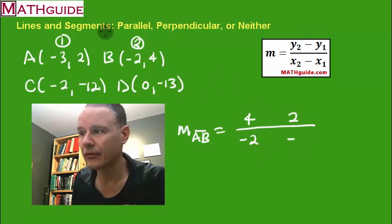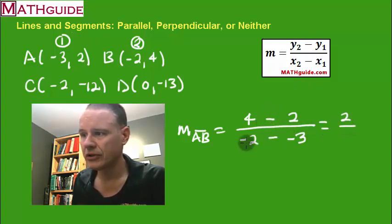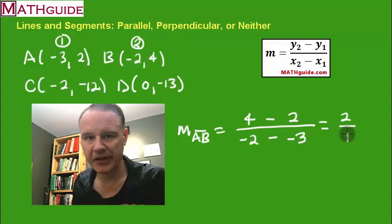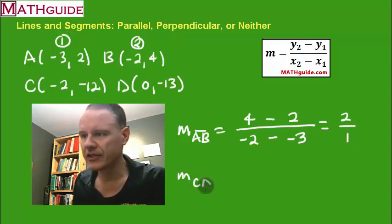I can write that a little bit neater. And the formula says I have to subtract them. So 4 minus 2 is 2. Negative 2 plus 3 is 1. Which is just plain old 2. Let's calculate the slope of CD.